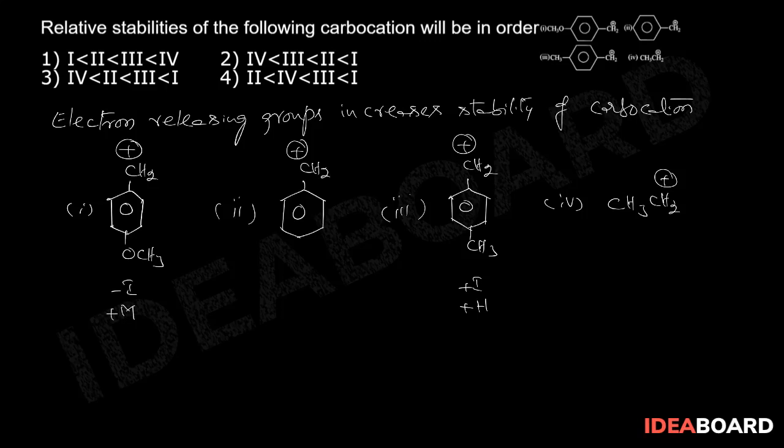Among these, mesomeric effect makes it highly stable, so first one is more stable. Next, electron releasing groups are present in third case, so it is more stable.